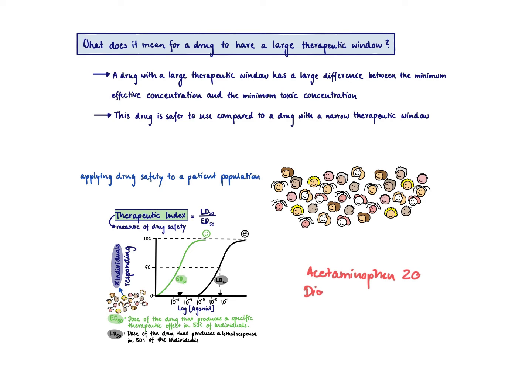For digoxin, this number is 2. So the therapeutic index is defined as the lethal dose for 50% of the population divided by the effective dose in 50% of individuals.